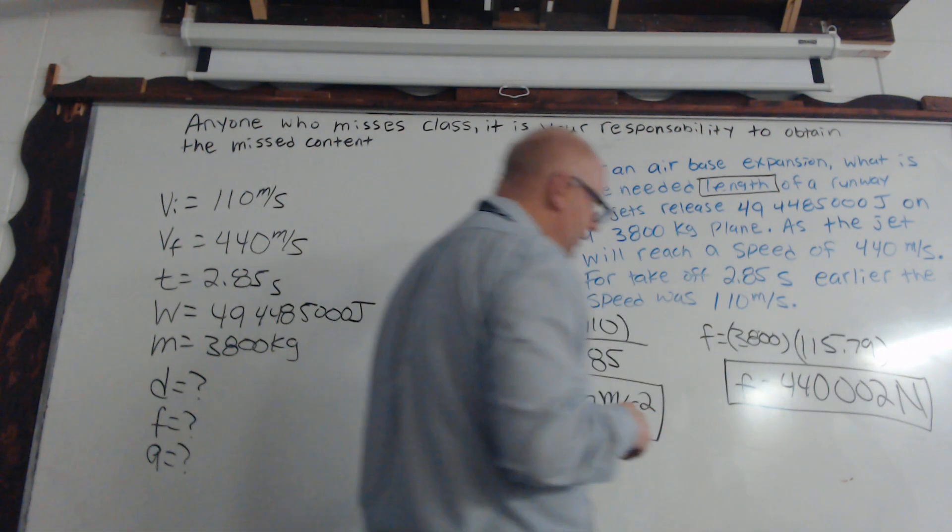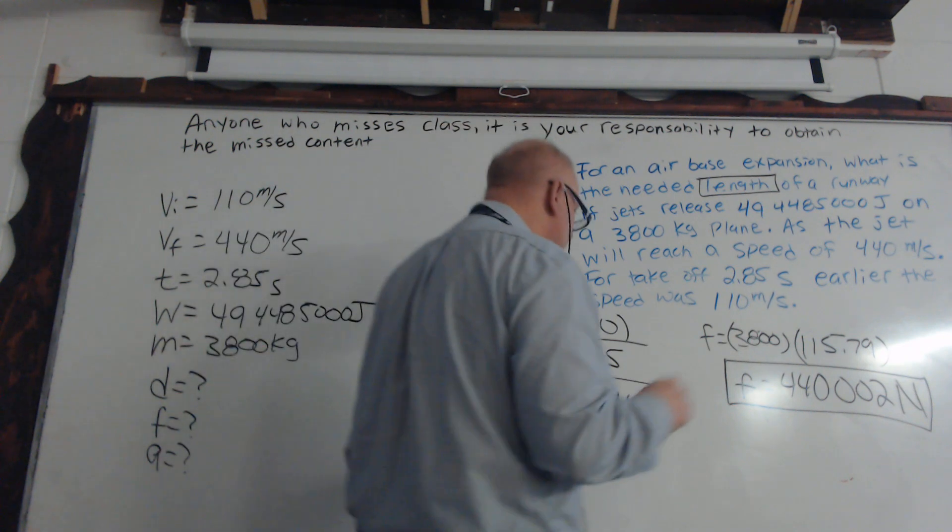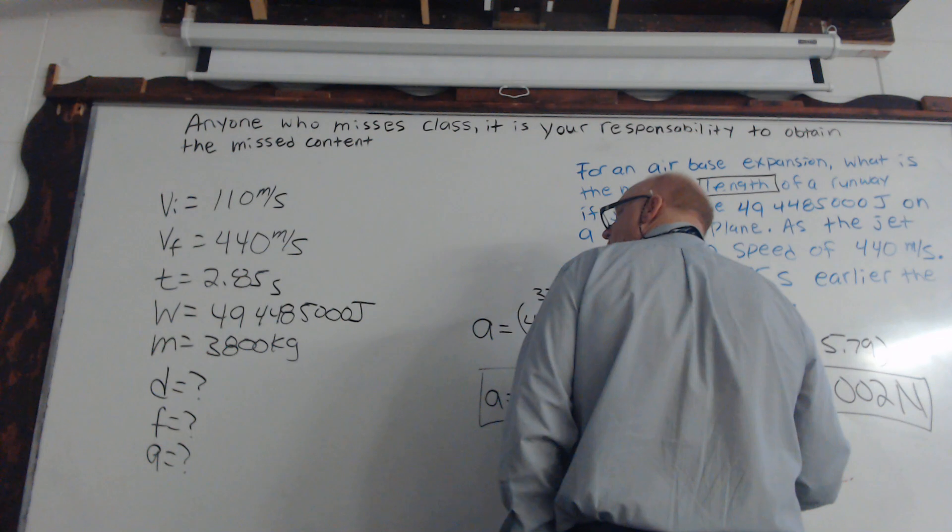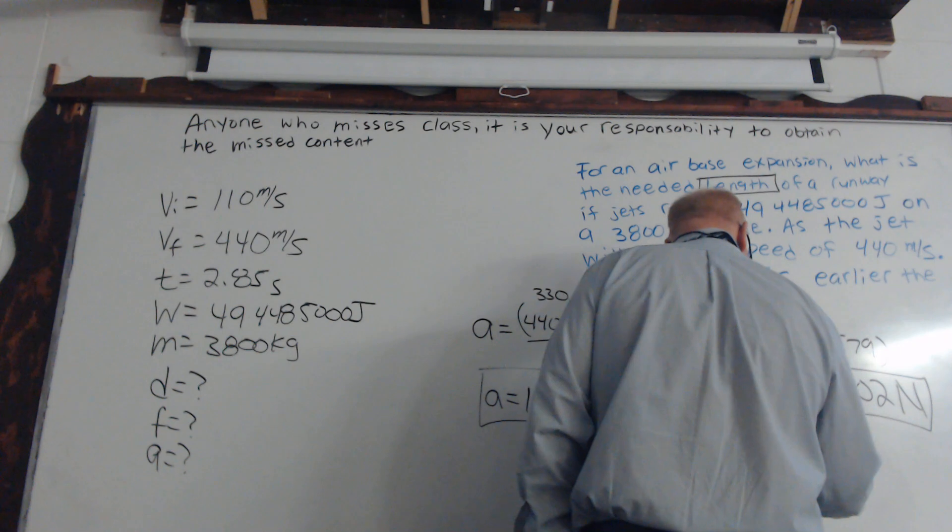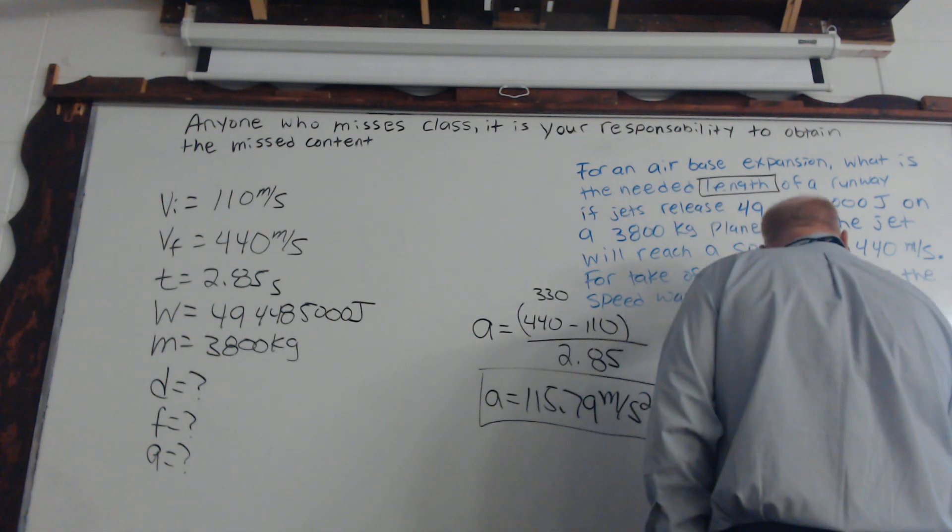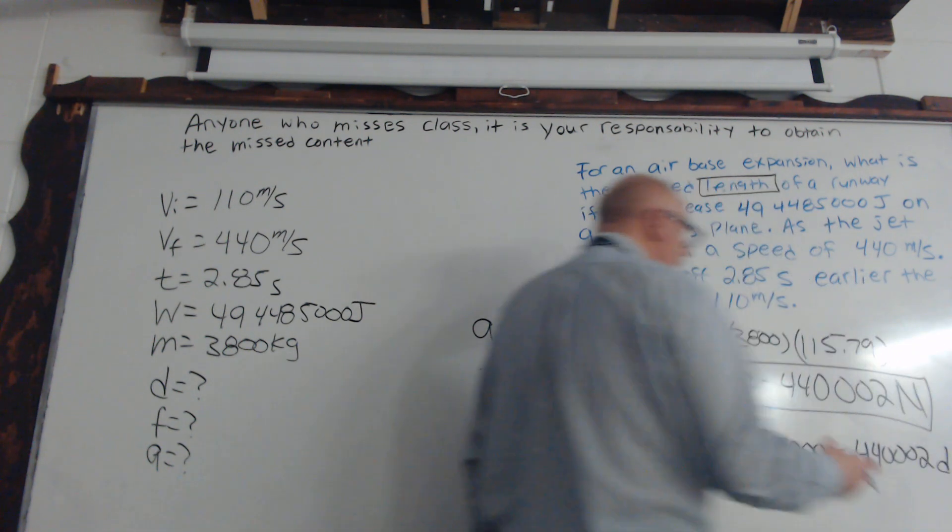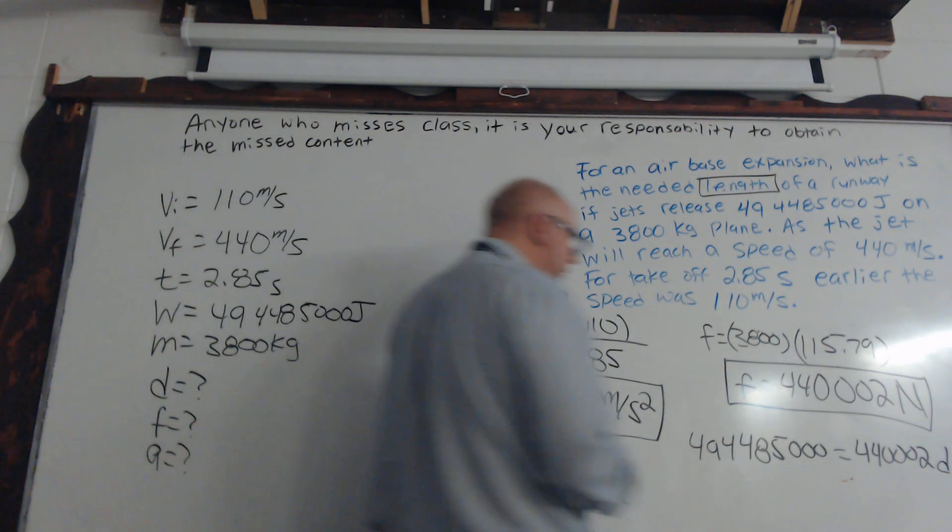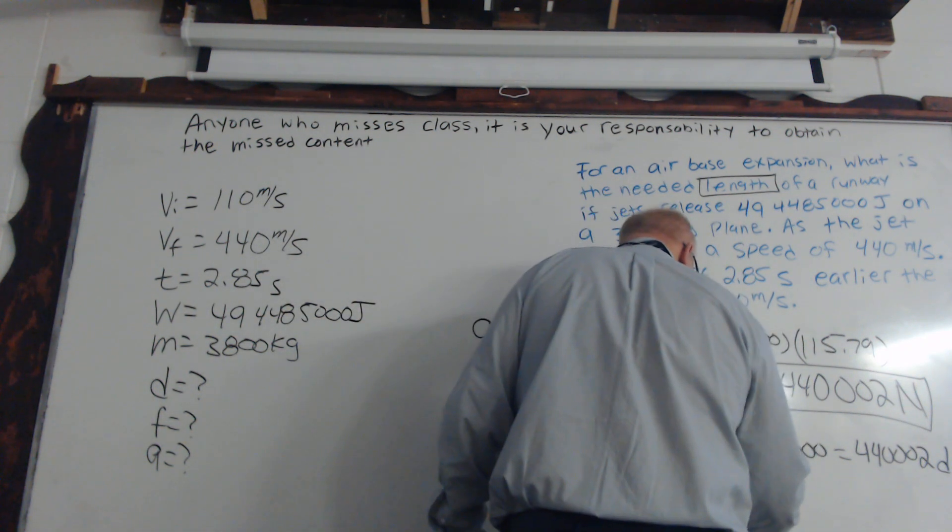So then finally, according to our work formula, that's our force times our distance. We know what the work is: 494,485,000. Then we also have our distance. We're multiplying between them two, so to undo that we have to divide, which then means our distance would be approximately...